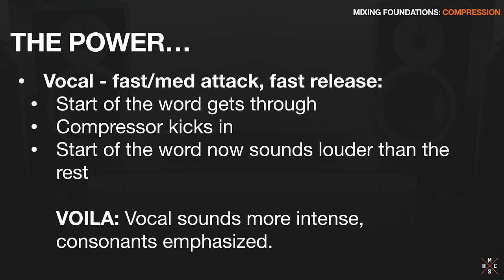I love to do that on vocal tracks. If you have a fast to medium attack - just enough to let the start of the word get through before it starts compressing - and then a fast release on a vocal, the compressor kicks in right after the start of the word gets through, and now the start of the word sounds louder than the rest because you've emphasized that transient or attack of the vocal. The result is the vocal sounds more intense, more up front because those consonants are emphasized. Go listen to any mainstream rock or pop song - listen to how much the consonants, those C's, T's, P's, really jump out of the speakers. This makes the vocal sound so much more energetic, like the singer is singing ten times harder than they actually were. And that heavy vocal compression also means the breaths in between and the subtle low-level characteristics of how the vocal sounds are emphasized too.